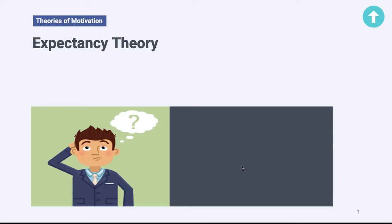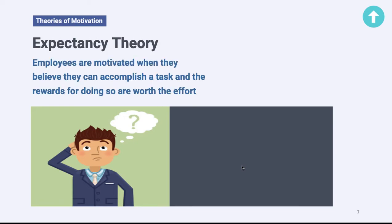One of the key components of motivation is where are you going to put your effort — where will you direct your time and energy? So if you want to understand whether or not someone is even going to begin working on a task, you would use expectancy theory. By definition, employees are motivated to work on a task when they believe they can accomplish it and the rewards for doing so are worth the effort.